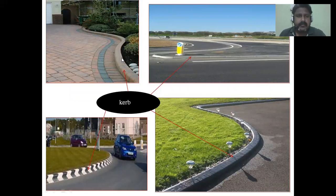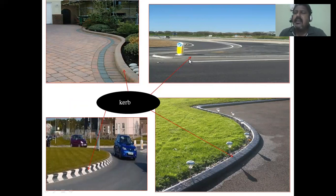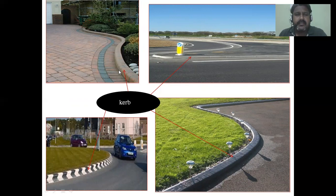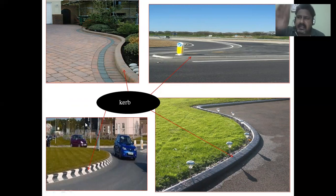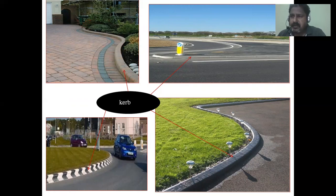Looking at photographs: this is a barrier type kerb — a vehicle cannot go up from here. This is a semi-barrier kerb — if you try a little, the vehicle can get over it. This is a low or mountable kerb — the car can go above it easily. These are the kerb stones. I hope this is clear.